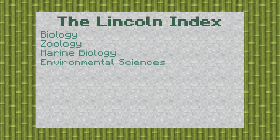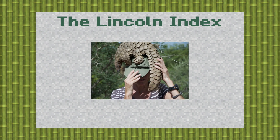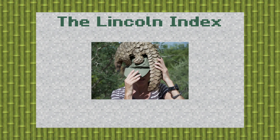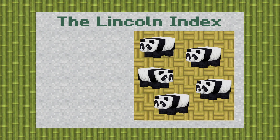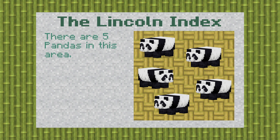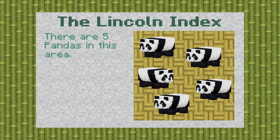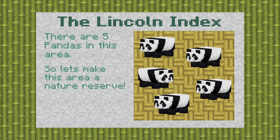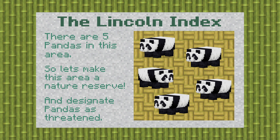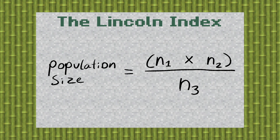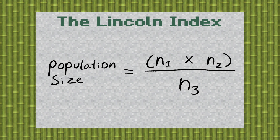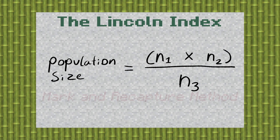The Lincoln Index is used across multiple disciplines, but it's mainly used by conservationists to find out an estimate for a population size. This can then tell the conservationists roughly how many of a species there are in a given area, which can then be used to create protective areas, or be used to determine whether a species is endangered or not. The Lincoln Index is actually just an equation, but it's used in tandem with data collected with the Mark and Recapture Method.